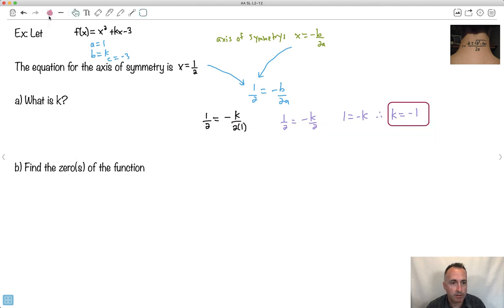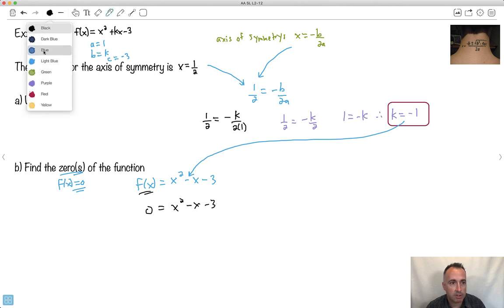So k is minus 1. Now if we want the zeros, let's rewrite what f of x is with k. It's x squared minus x minus 3, because k was minus 1. If I want the zeros, the zeros are when f of x equals 0. So 0 equals x squared minus x minus 3. I'll write out my a's, b's, and c's. So a is 1, b is minus 1, and c is minus 3.